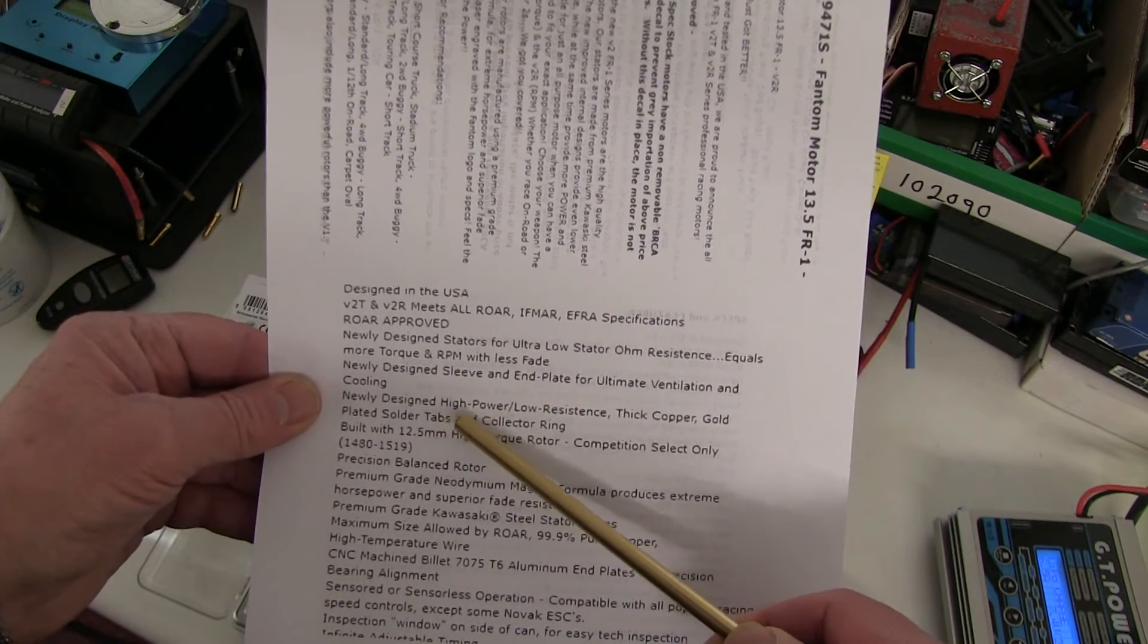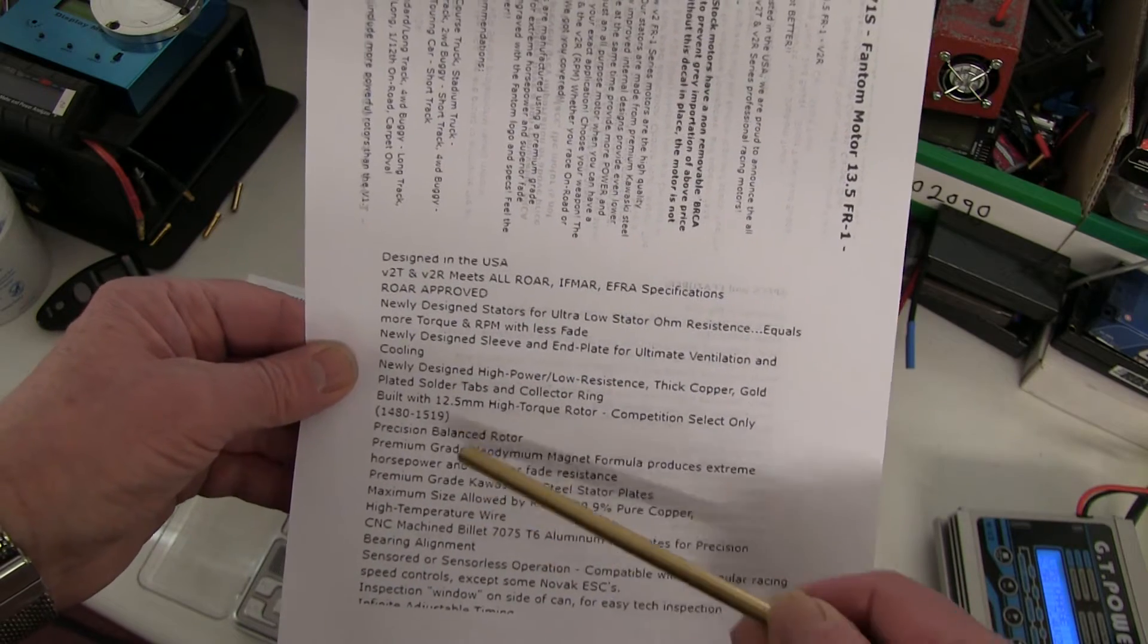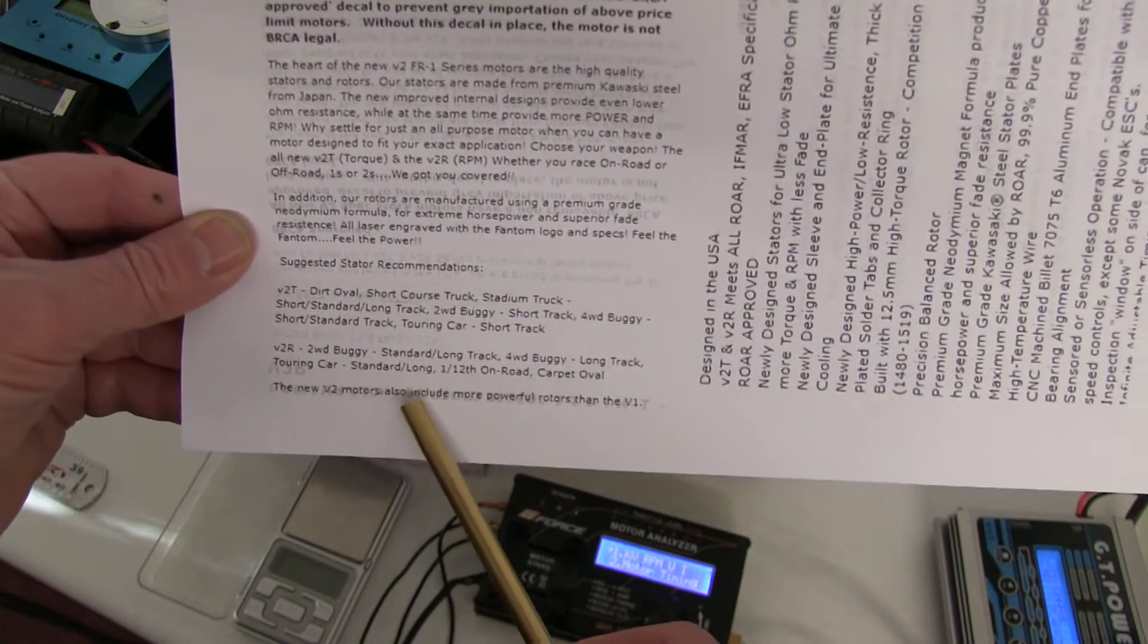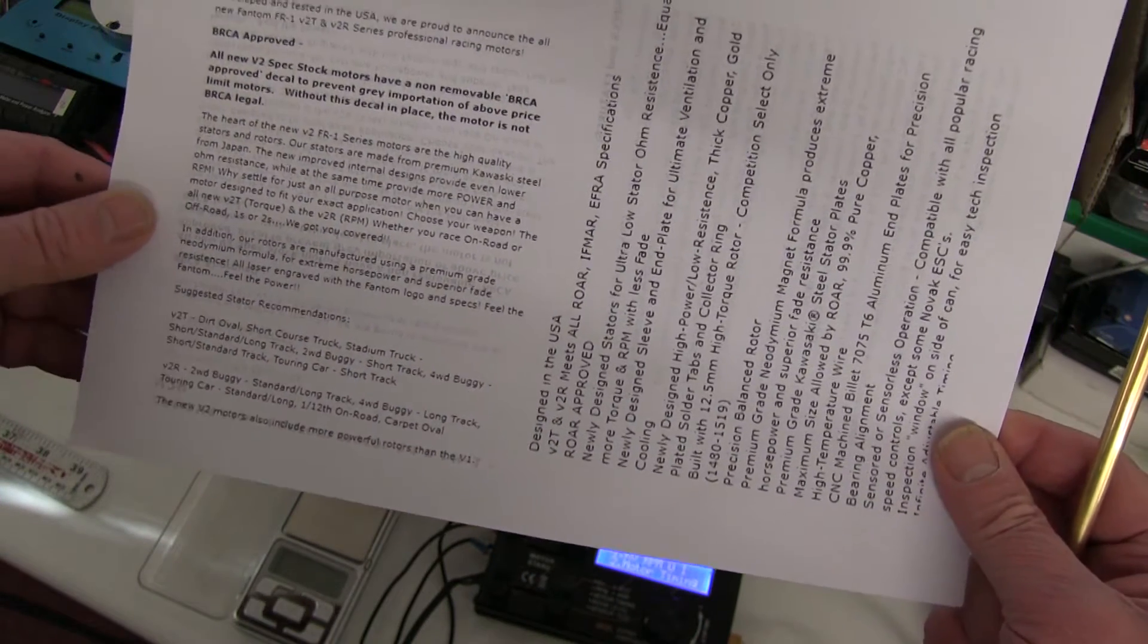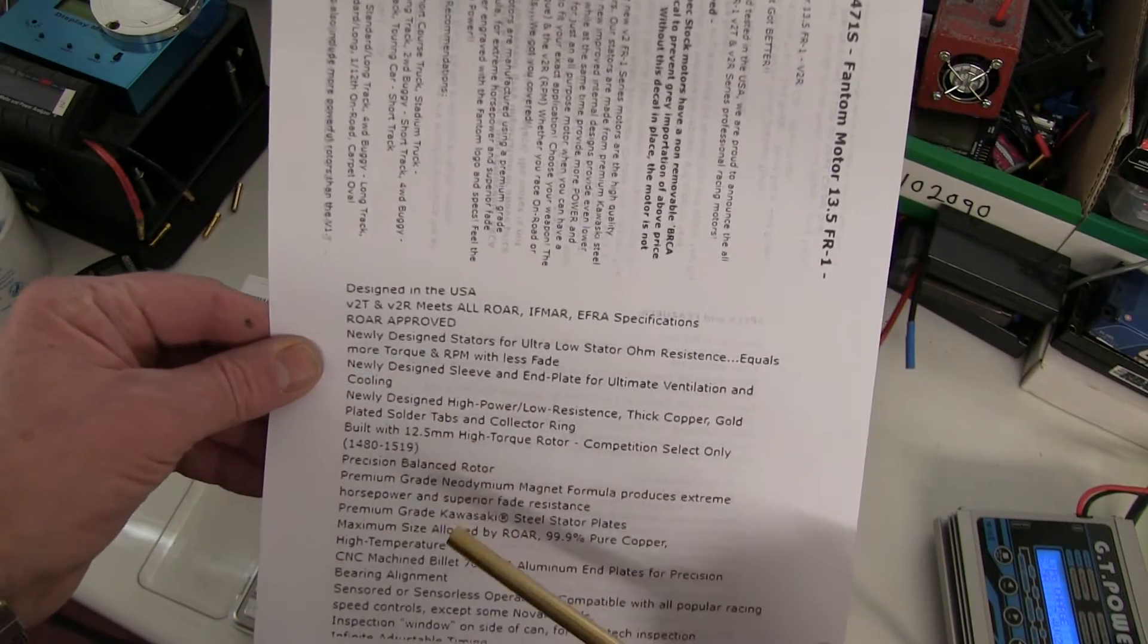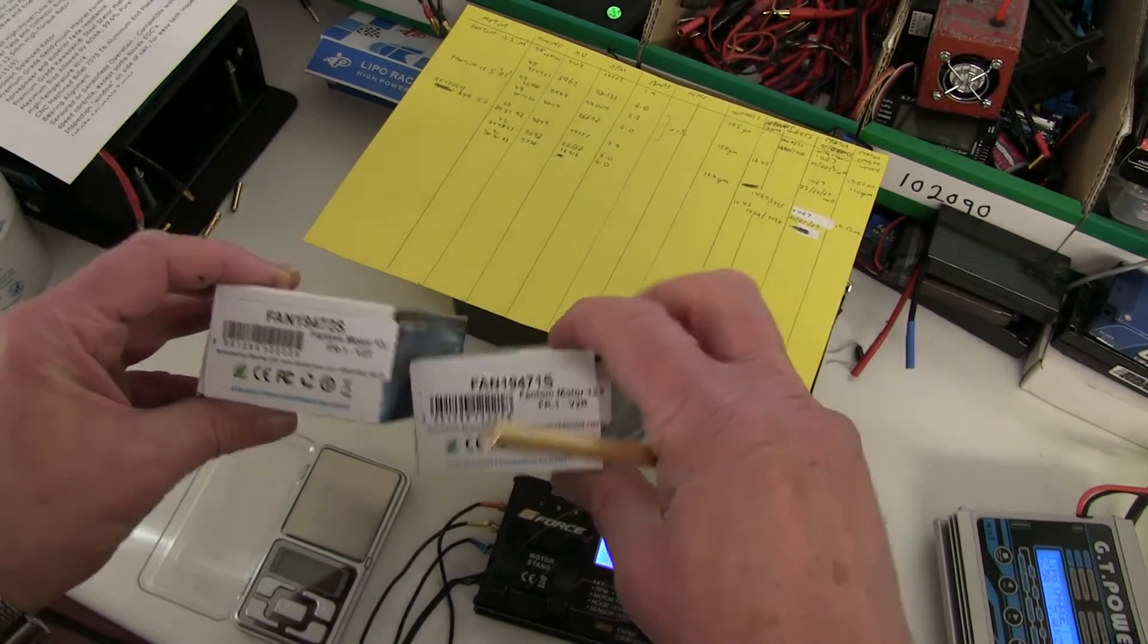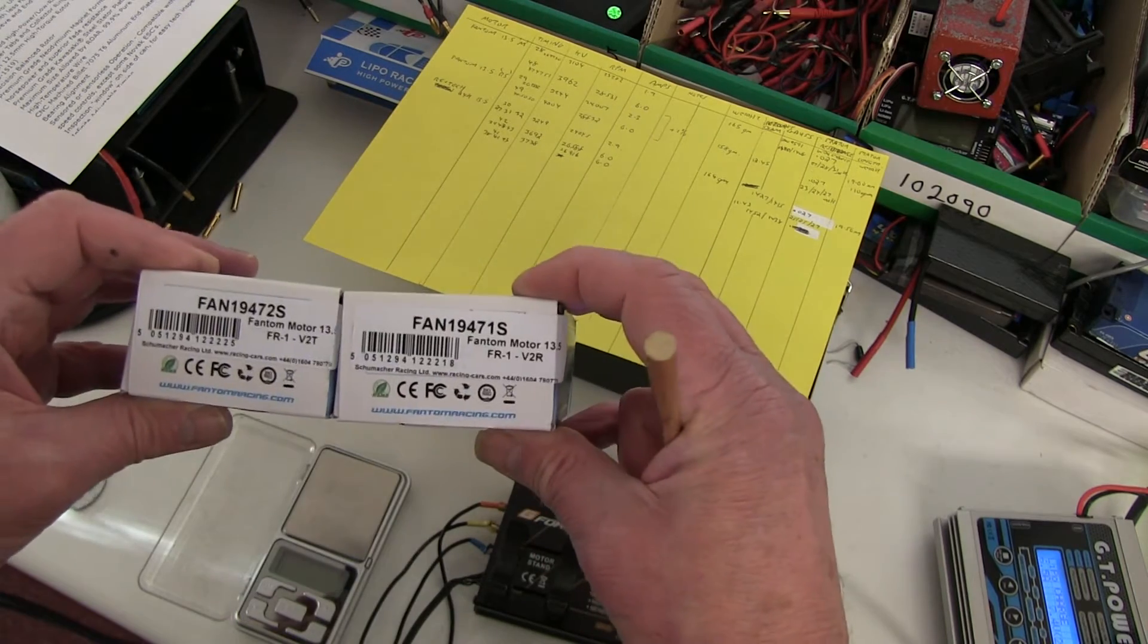New design stators, new design sleeve and end plate, new design low resistance solder tabs, and all the rest of the stuff like in the previous model. But one thing it does say here: the new v2 motors also include more powerful rotors than the v1. They also say there's two versions, a torque one and an RPM one. Here are the two motors: there's the one that says v2t for torque and v2r for revs.